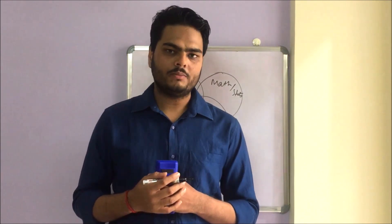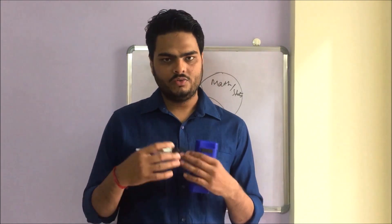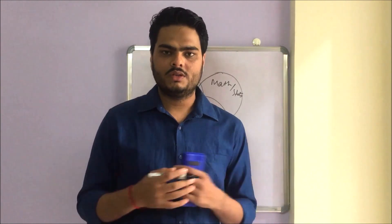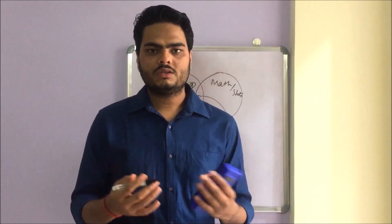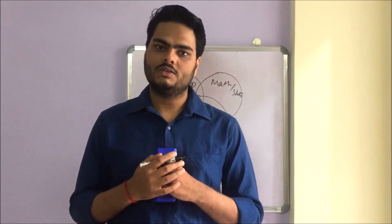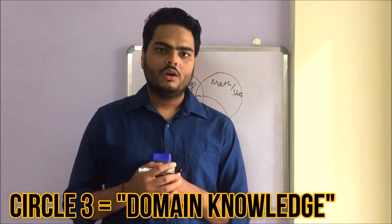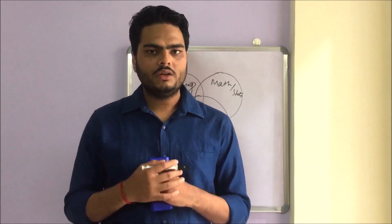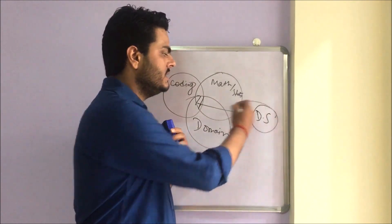The third important area is domain understanding. For example, if I'm working on insurance data, I should have a decent understanding of how the insurance industry works — how claims are processed, major areas of the industry, and so on. The more I know, the better my analysis will be. So the third major component is domain knowledge. The intersection of all three areas — coding, math/statistics, and domain — is data science.